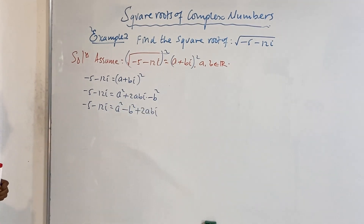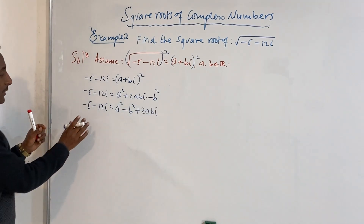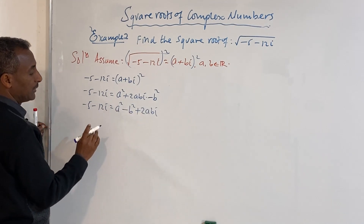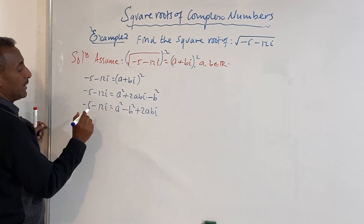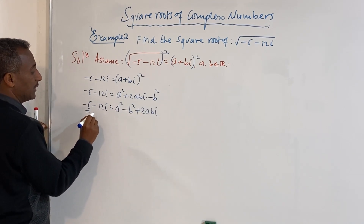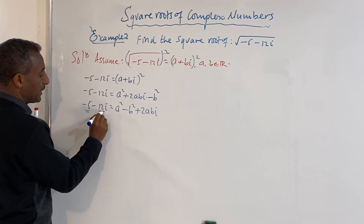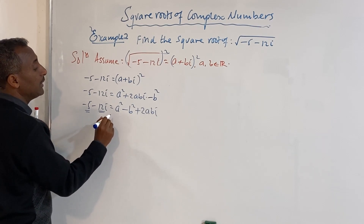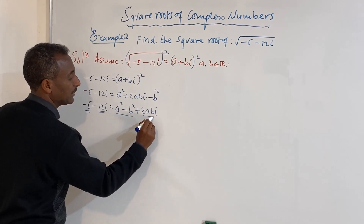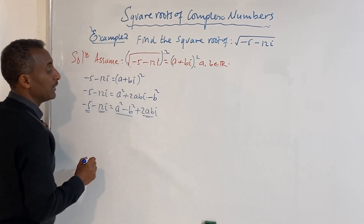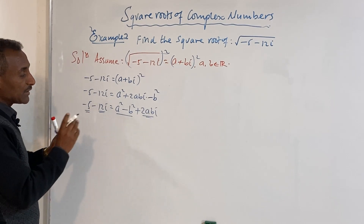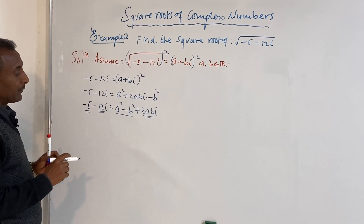So we now have two complex numbers that are equal. We identify the real part and the imaginary part on each side. The real part on the right is a squared minus b squared, and the imaginary part is 2ab.